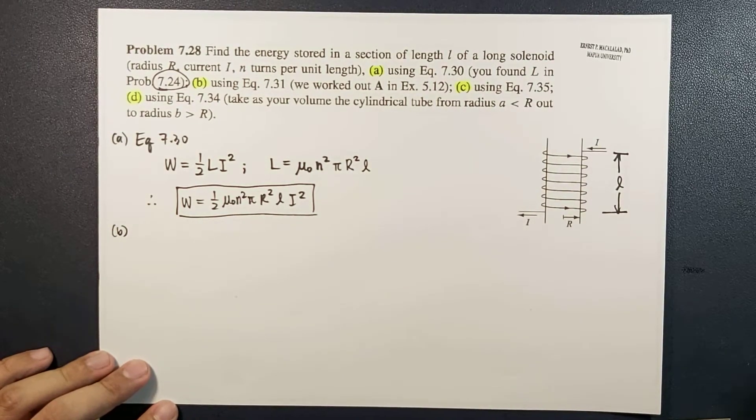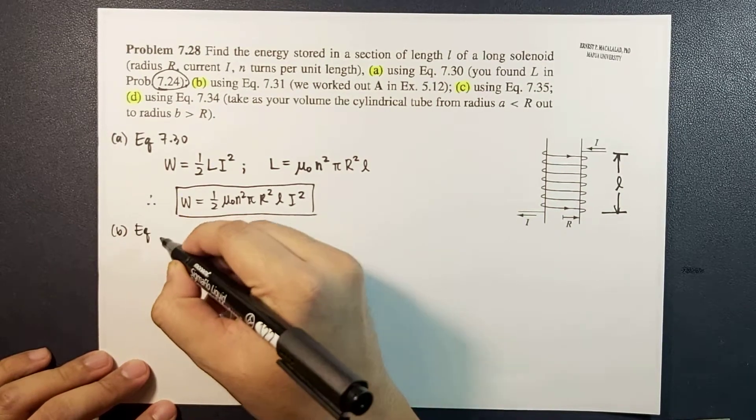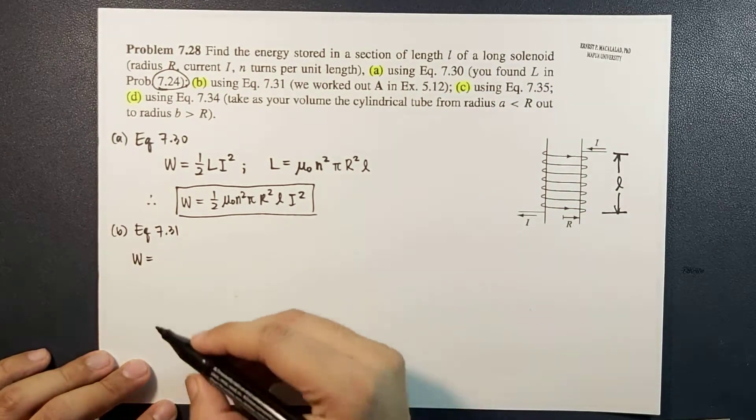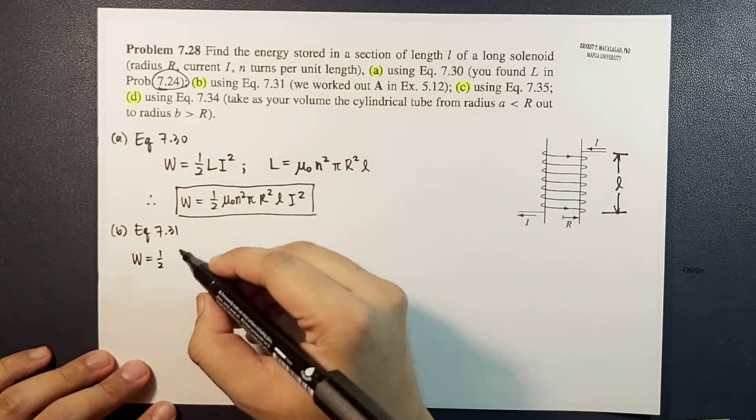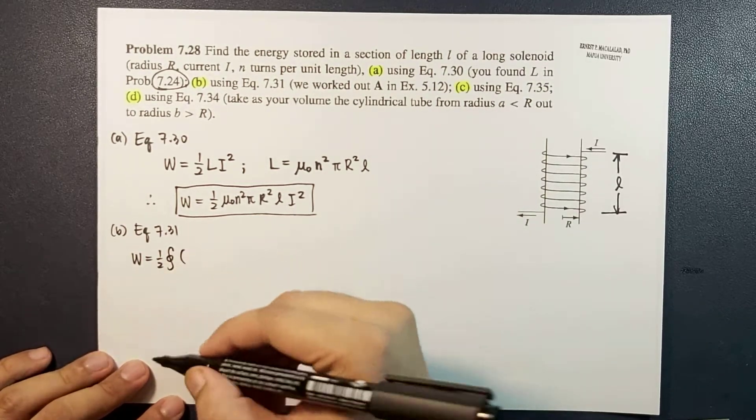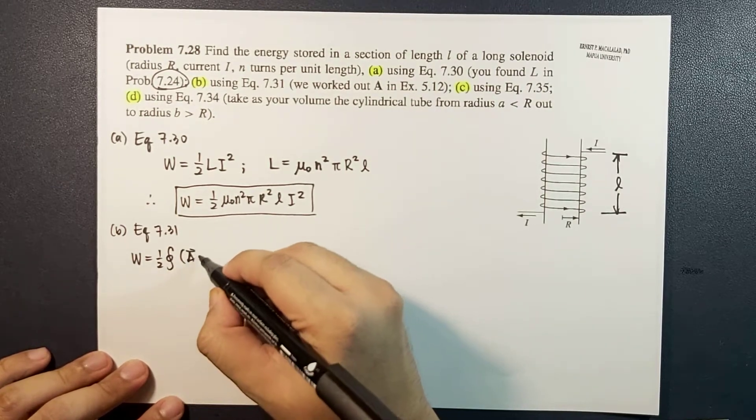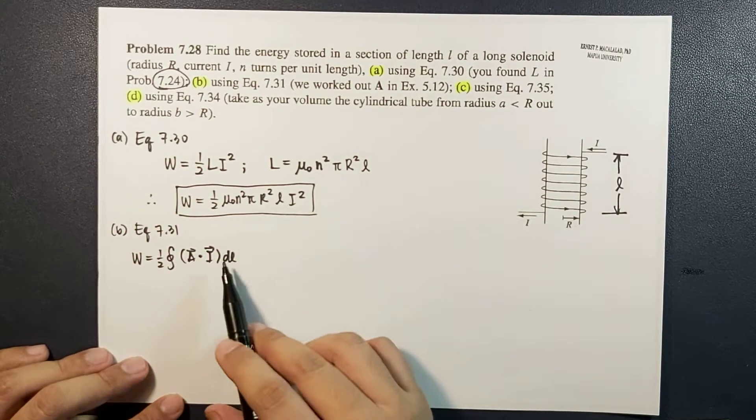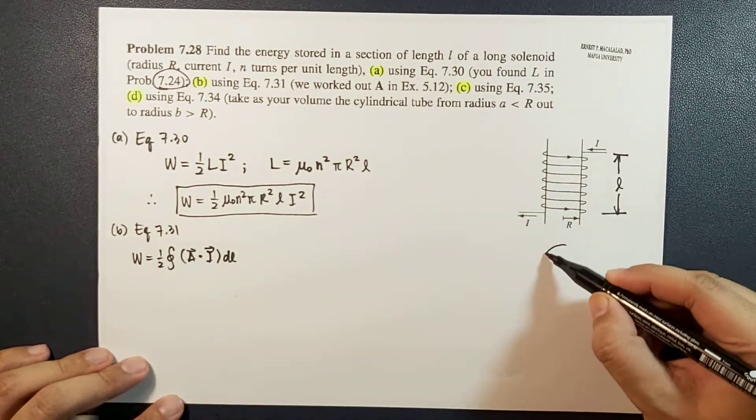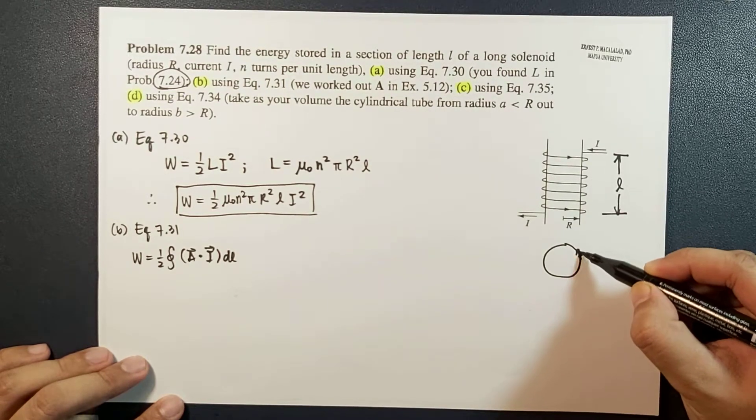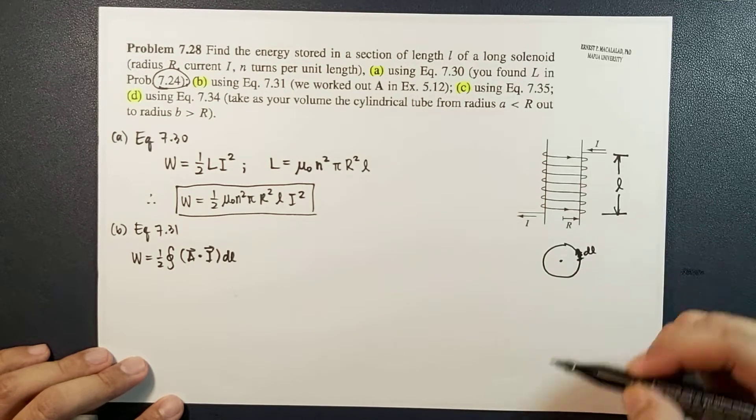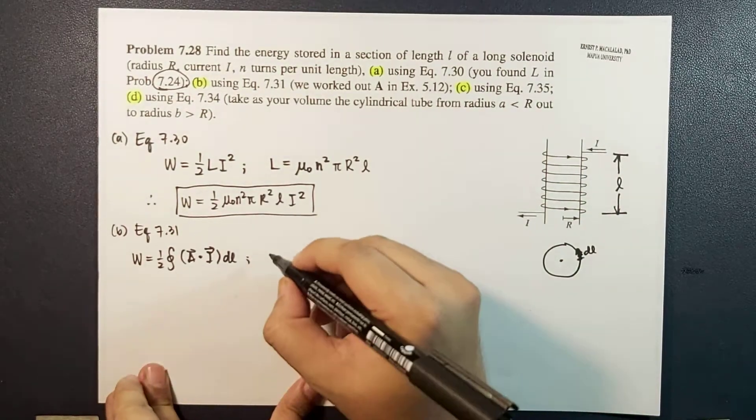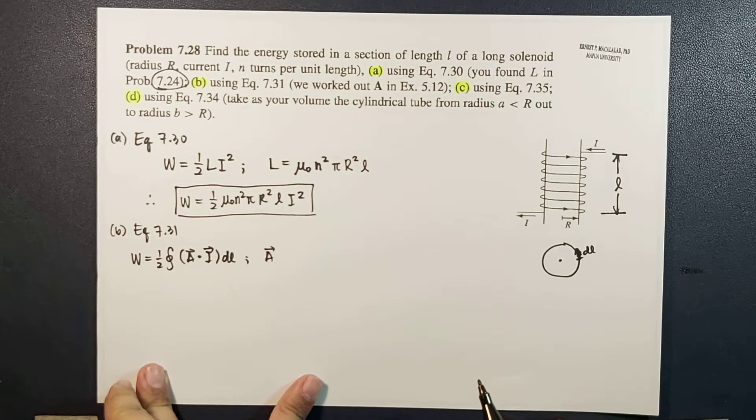Letter b says that we should use equation 7.31. This is: the stored energy is equal to one half times the closed line integral of A dot i dl. In this case, our dl will be the infinitesimal l around this circular loop for each circular loop.